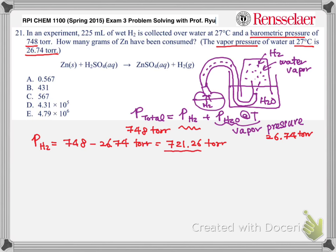So in order for me to use this pressure unit using the ideal gas law, I need to convert that, which is corresponding to 0.95 atm. Remember, 1 atm is 760 torr or millimeter Hg. So now I know the pressure from the hydrogen gas corresponds to 0.95 atm.